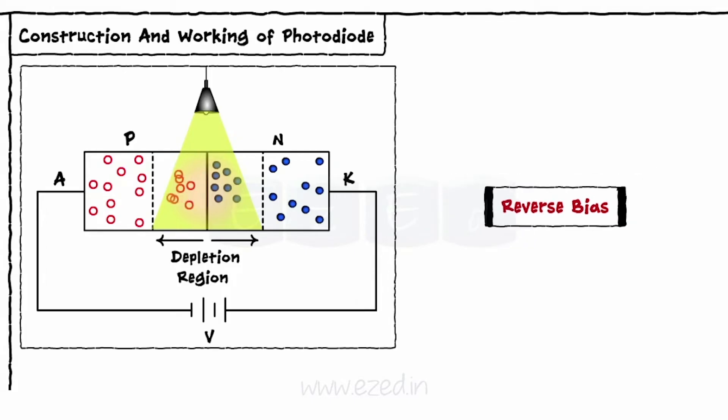Being in the reverse bias mode, holes get attracted towards the P region by negative terminal of the battery and electrons get attracted towards the N region by positive terminal of the battery.